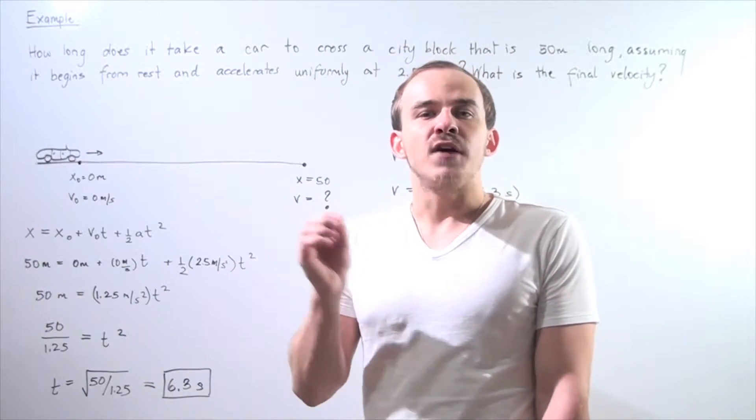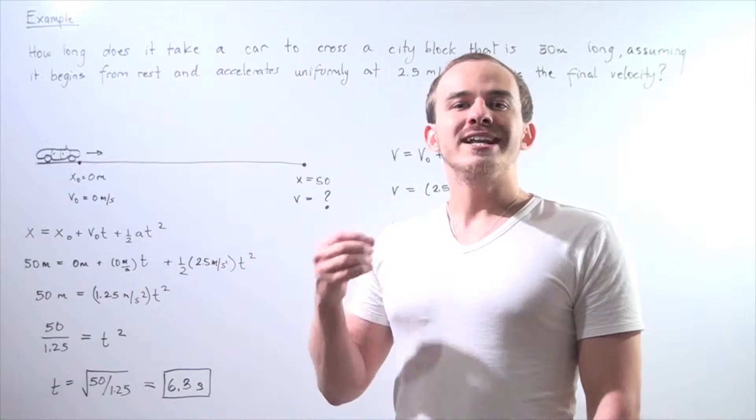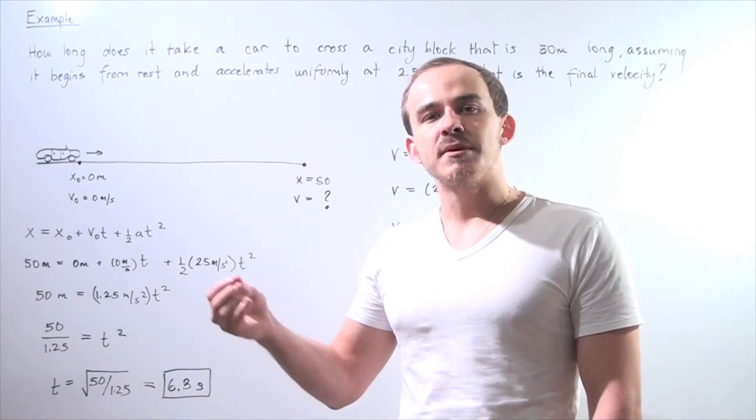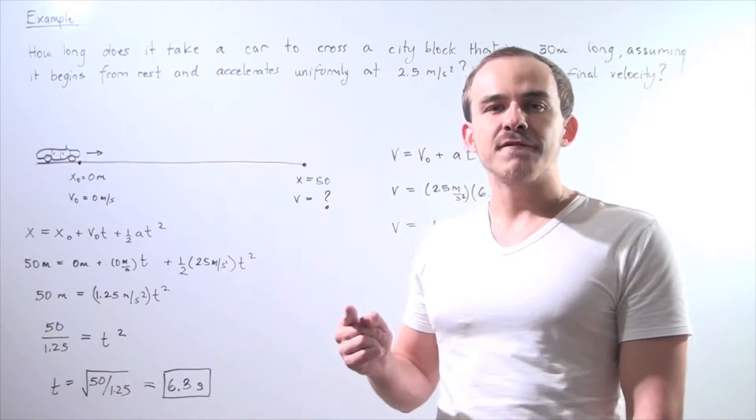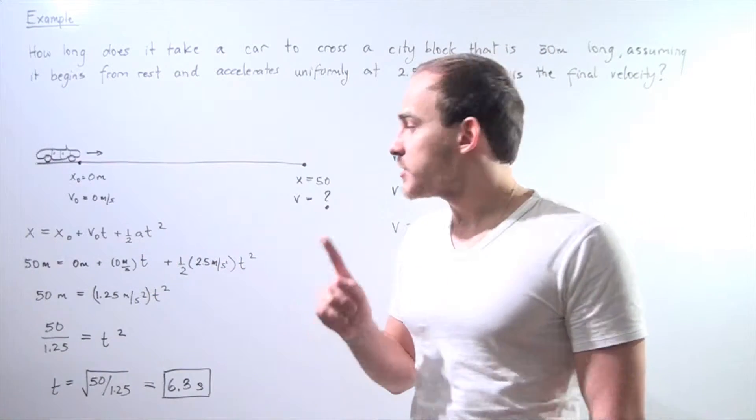Our x or our final position is equal to the initial position plus our initial velocity times the time elapsed plus 1 half times our acceleration multiplied by our time squared.